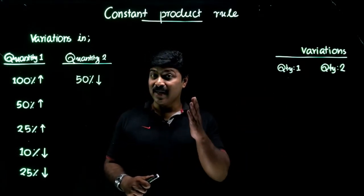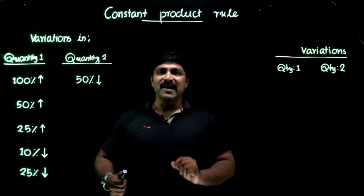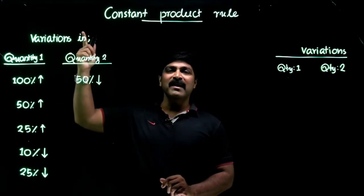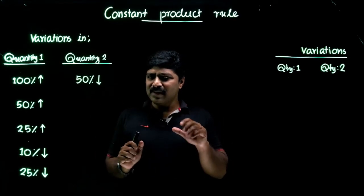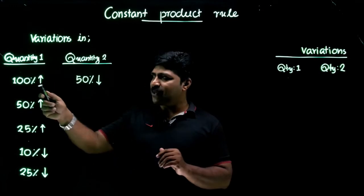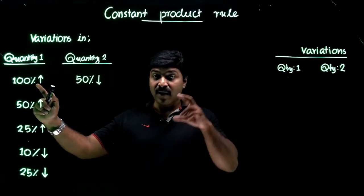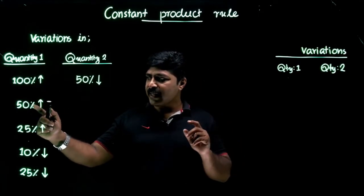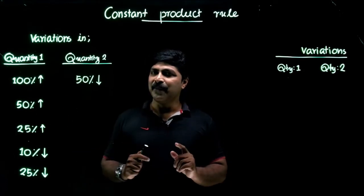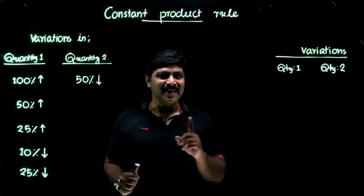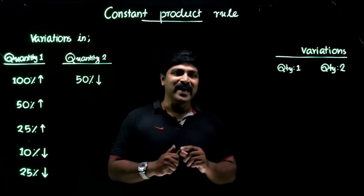Most students or aspirants will conclude that if one quantity is increased by 50 percent, the corresponding decrease will be 25 percent. That's a normal logical pattern because 50 is half of 100, so they apply the same halving logic. But that is not correct — you have to apply a very important result, which I will explain now.